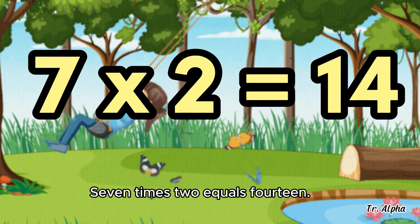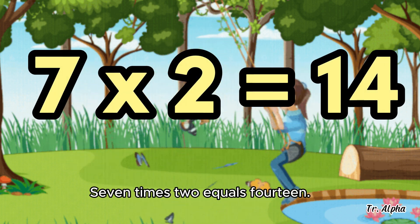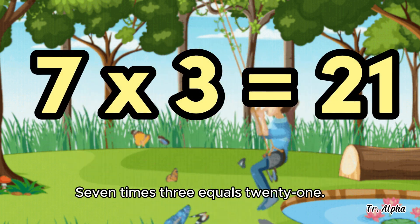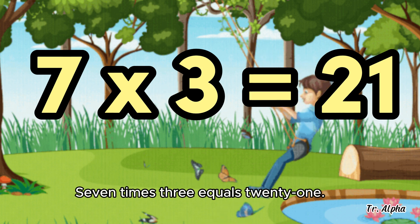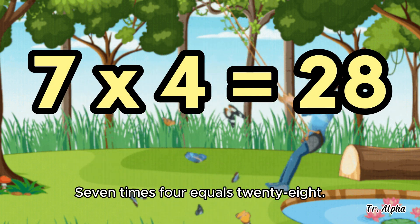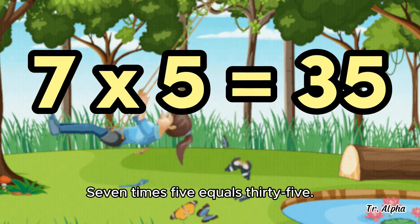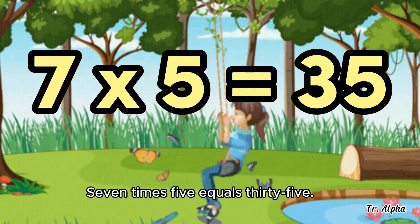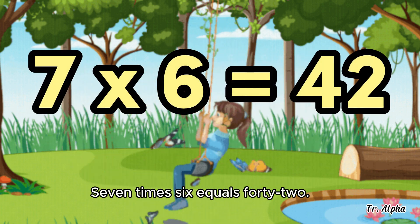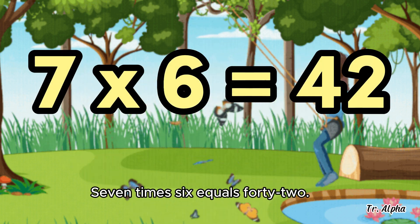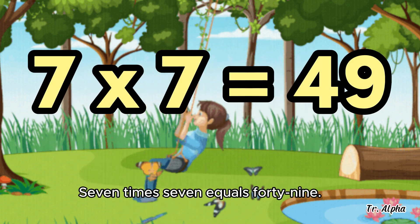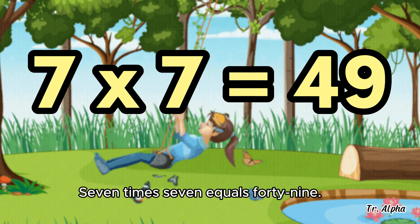7 times 2 equals 14. 7 times 3 equals 21. 7 times 4 equals 28. 7 times 5 equals 35. 7 times 6 equals 42. 7 times 7 equals 49.